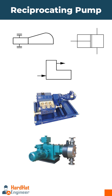Next is the reciprocating pump, which can be piston type or diaphragm type. In a process plant, these types of pumps are normally used in dosing skids that have low volume with high accuracy discharge.